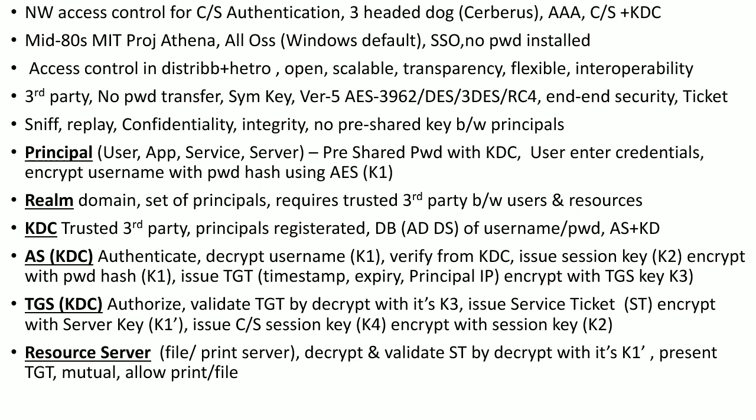The client replays this service ticket in encrypted form to the resource server, which decrypts it using its own key. This also performs mutual authentication — if the ticket is successfully decrypted by the server, it confirms the server is legitimate. For example, if a client wants to access a print server or file server, it gets the service ticket from the TGS and presents it to the server, which decrypts it and grants access.